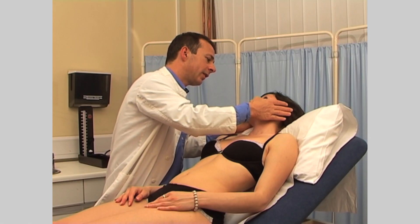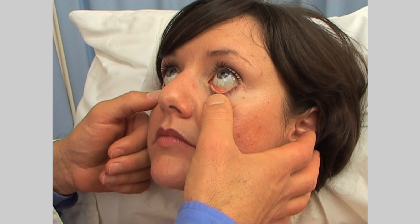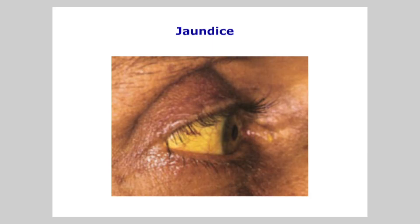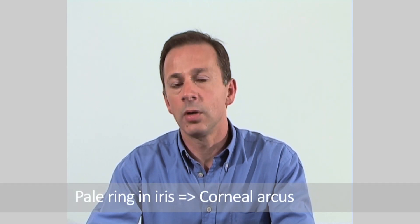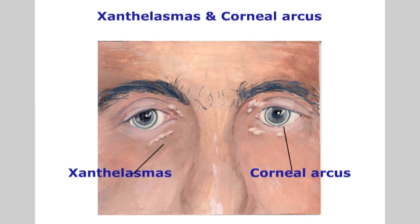Then check the sclera of the eyes for evidence of jaundice, and the conjunctival membranes for anemia. Examine the iris for a whitish ring — this may be corneal arcus. In an older person this may not be significant, but in a younger patient it usually signifies high cholesterol. Note the presence of xanthelasmas, or fatty deposit nodules around the eyes. This could signify hypercholesterolemia, or increased lipid levels in the blood.